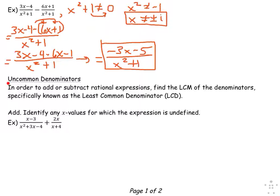What happens when you start with uncommon denominators? Before you can add and subtract, you have to find the least common multiple of the denominators, known as the least common denominator or LCD. Again, our direction is to identify any x values for which the expression is undefined. I'll follow something like: factor, exclude, and then divide. So I'll start off by factoring the first term's denominator.